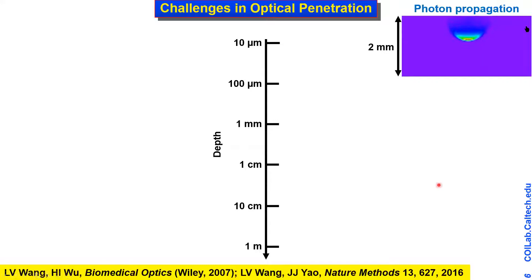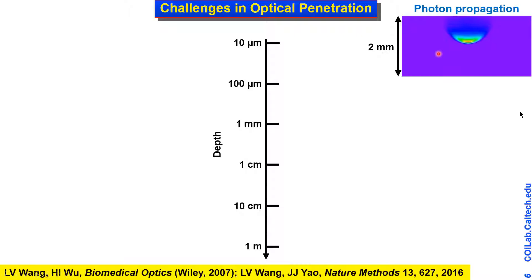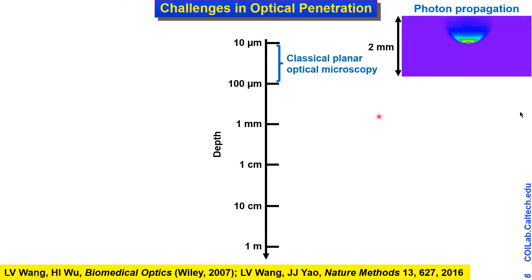This movie was run using Monte Carlo simulation. You launch a short laser pulse and you can see how photons spread. Within about a millimeter, the propagation transitions into the so-called diffusive zone, and you can use the same equation used for heat transfer to model photon transfer beyond a millimeter in depth, which presents a huge challenge for deep tissue biological imaging.